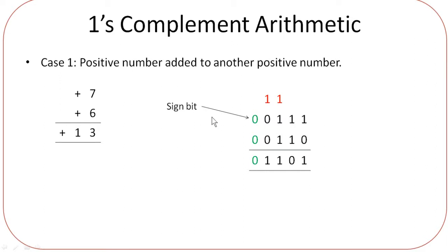In binary arithmetic it does the same thing. The binary value for 7 is 111, and for 6 is 110. In questions they will ask you for 5-bit or 8-bit numbers. So if you want to convert to a 5-bit number, you have to make it a 5-digit number by adding zeros in front. The leftmost bit is called the MSB — most significant bit — also called the sign bit. If it is 0, it indicates a positive number; if the sign bit is 1, it indicates a negative number. Since both 7 and 6 are positive, the sign bit is 0.